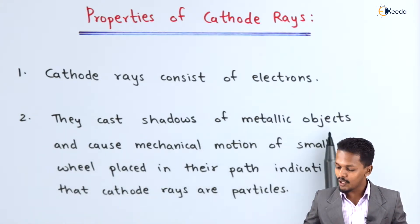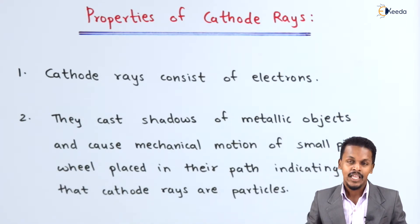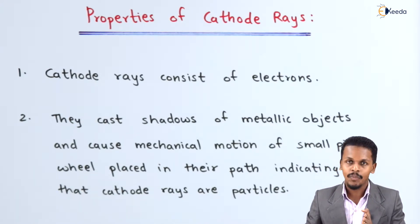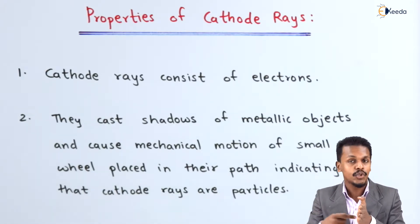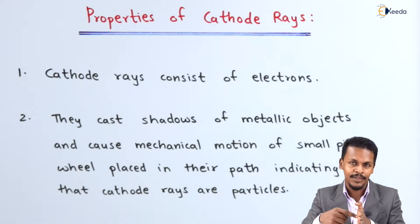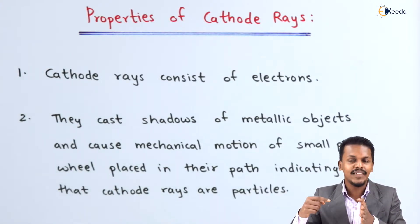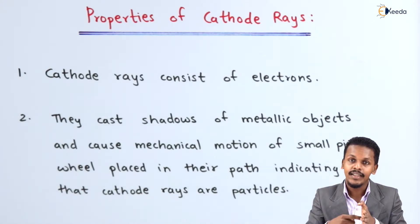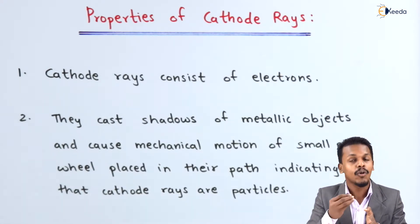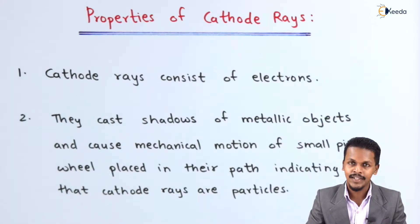Cathode rays cast shadows of metallic objects and cause mechanical motion of a small spin wheel placed in their path, indicating that cathode rays are particles — negatively charged particles. When a heavy metal object is placed in their path, the shadow of the metal is projected in the opposite direction, showing that cathode rays cannot penetrate heavy metals, confirming that electrons are particles.